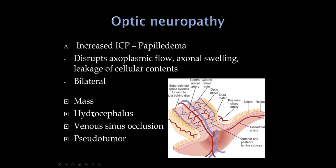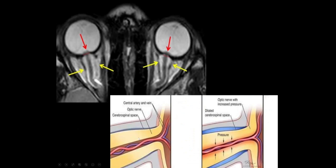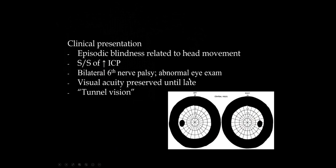If we have a mass lesion from a tumor, hydrocephalus, a venous sinus occlusion like of the superior sagittal sinus, or pseudotumor cerebri — which is idiopathic intracranial hypertension — these would all be common causes of papilledema. Increased pressure is transmitted around the optic nerve and optic nerve head. On MRI of the orbits, you can actually see that increased pressure through the subarachnoid space.